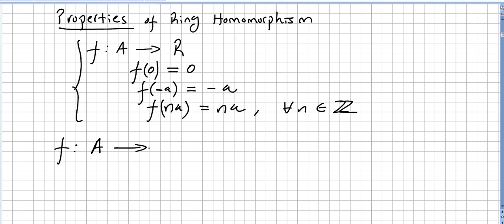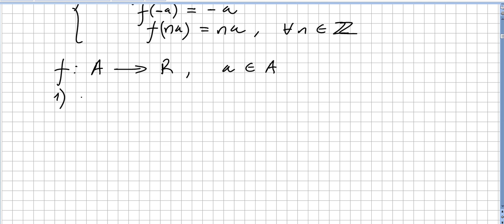We are going to pick now a ring homomorphism from a ring A to a ring R, and we will pick elements a in A. First property: f of a times a times a n times is the same as f of a to the power of n.